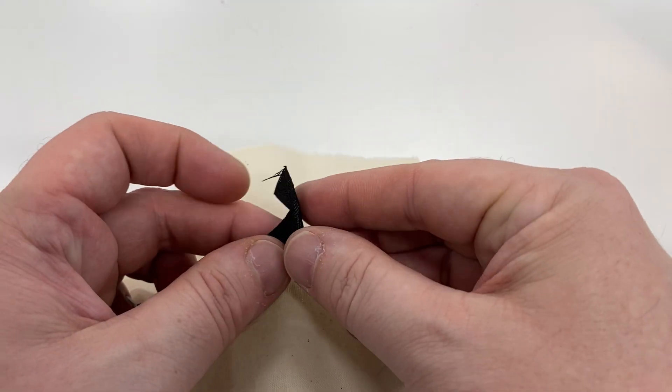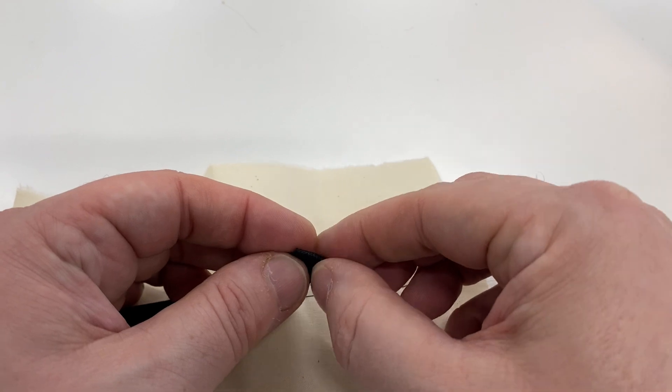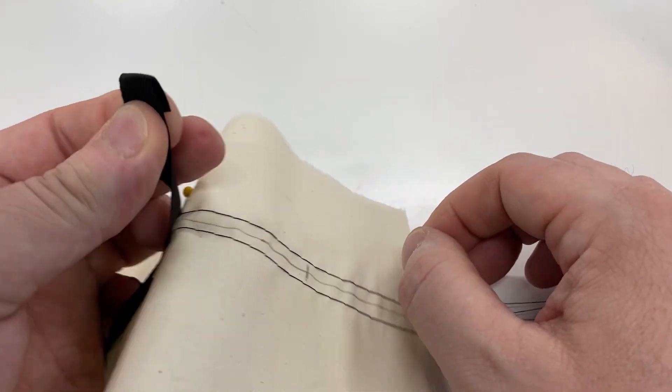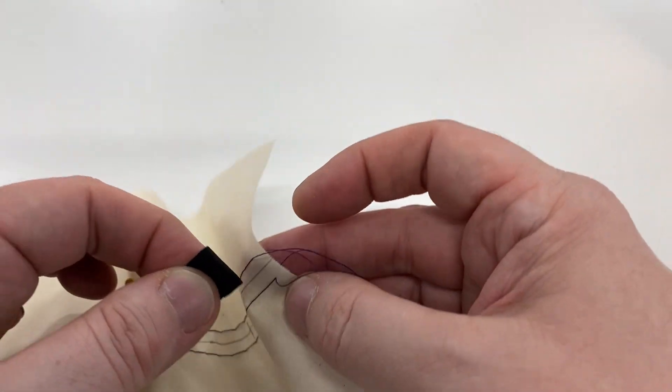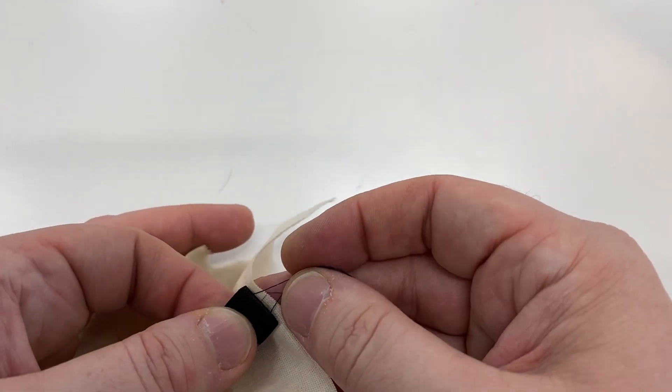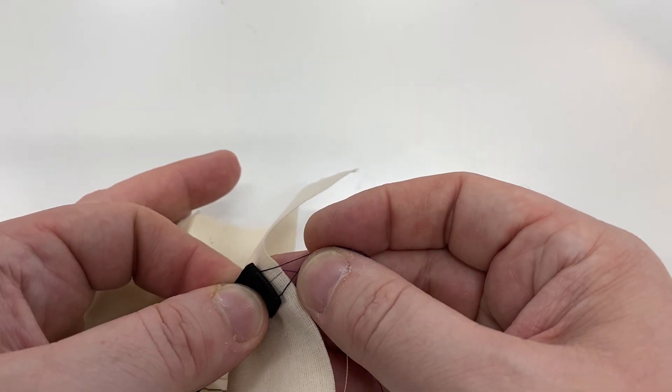Then I'm going to take this folded down finished edge that we've made. See, that's folded down and finished off now, and I'm going to pin it right to this edge over here, straddling that line.